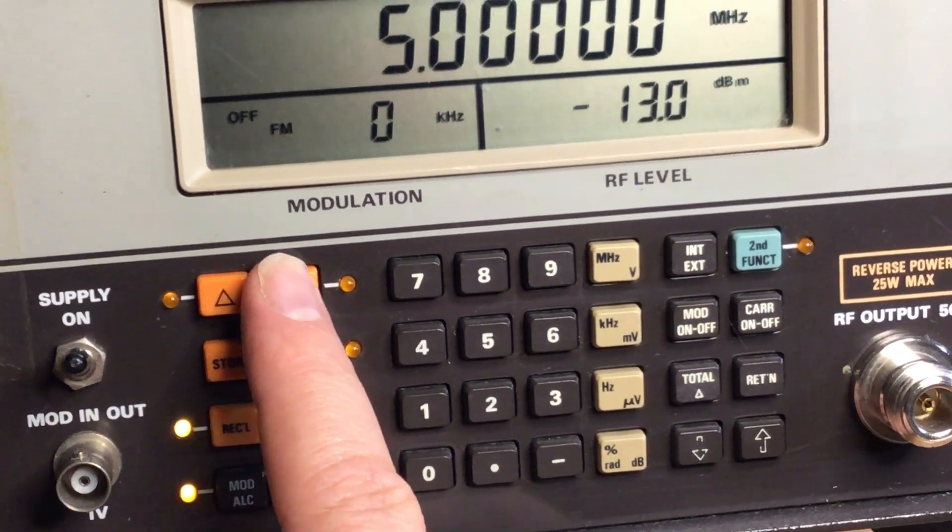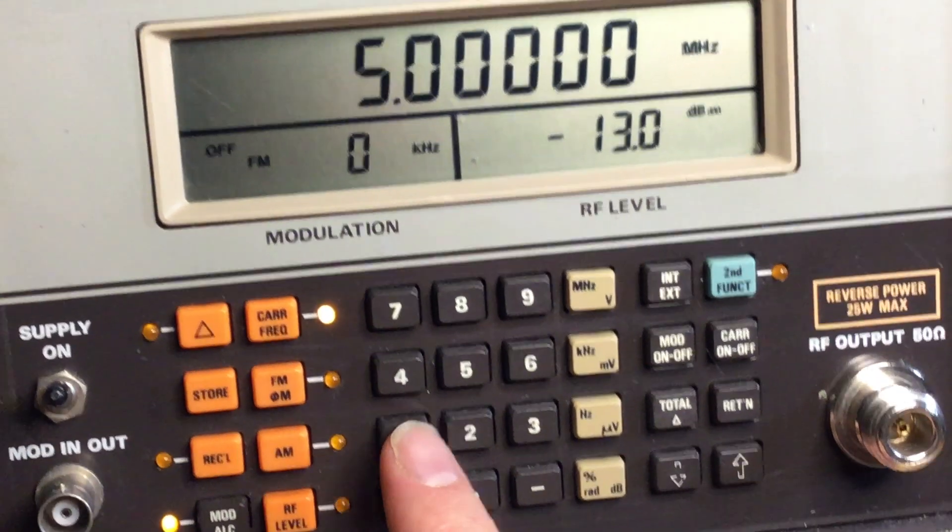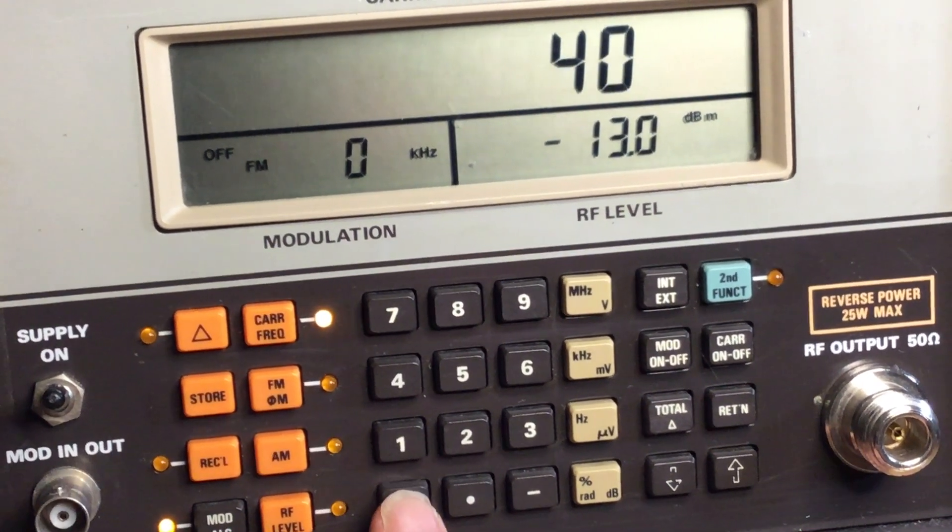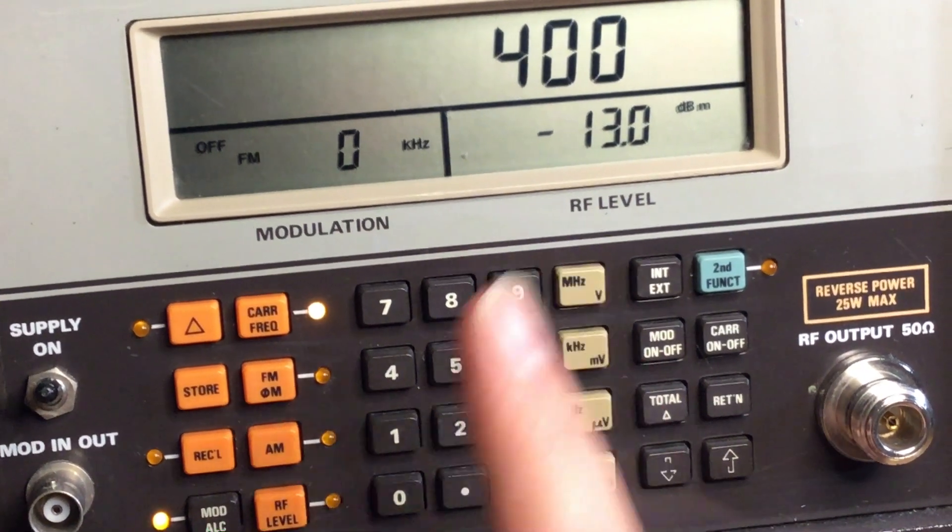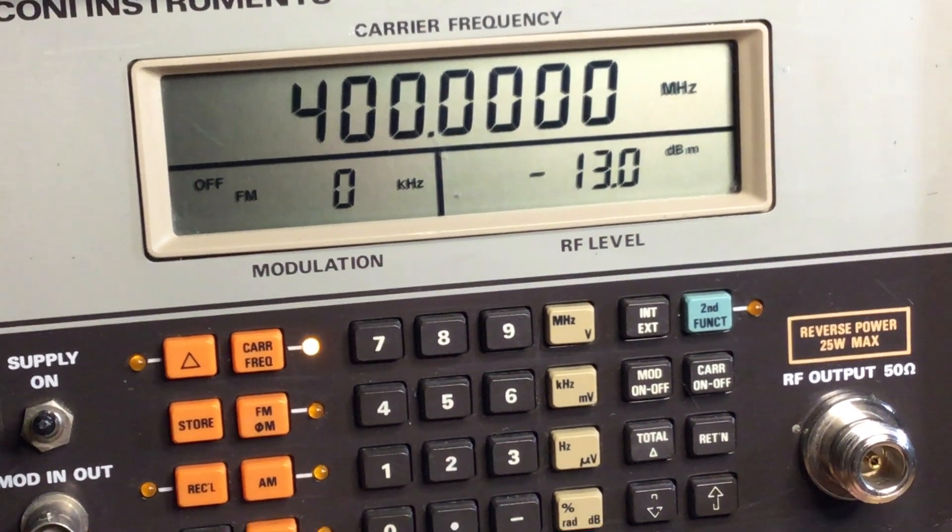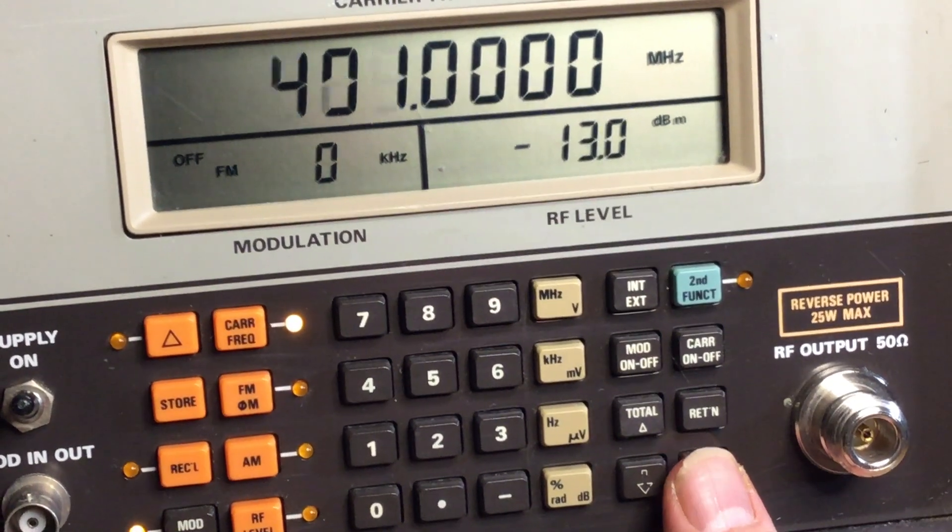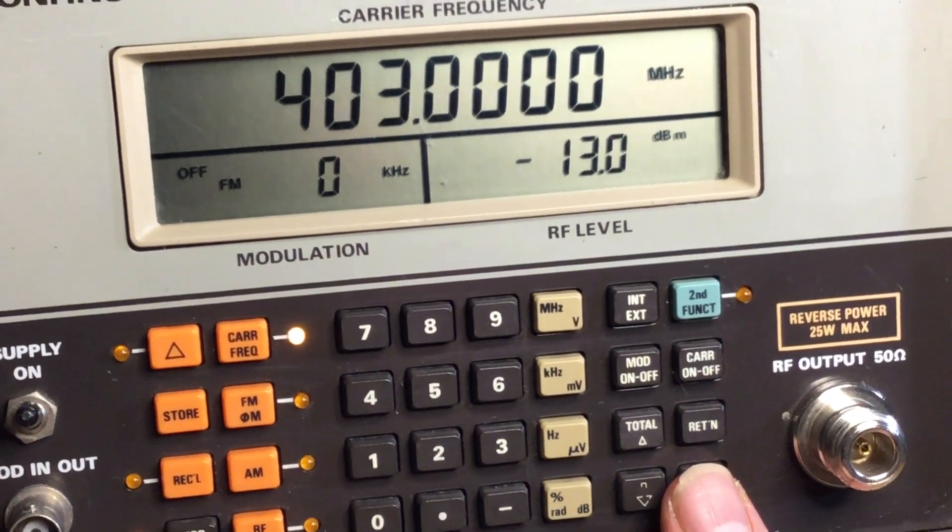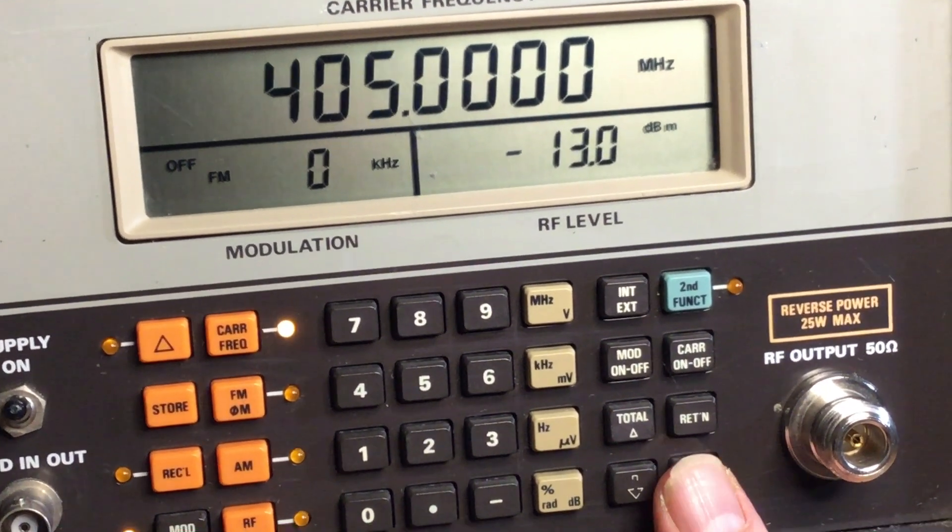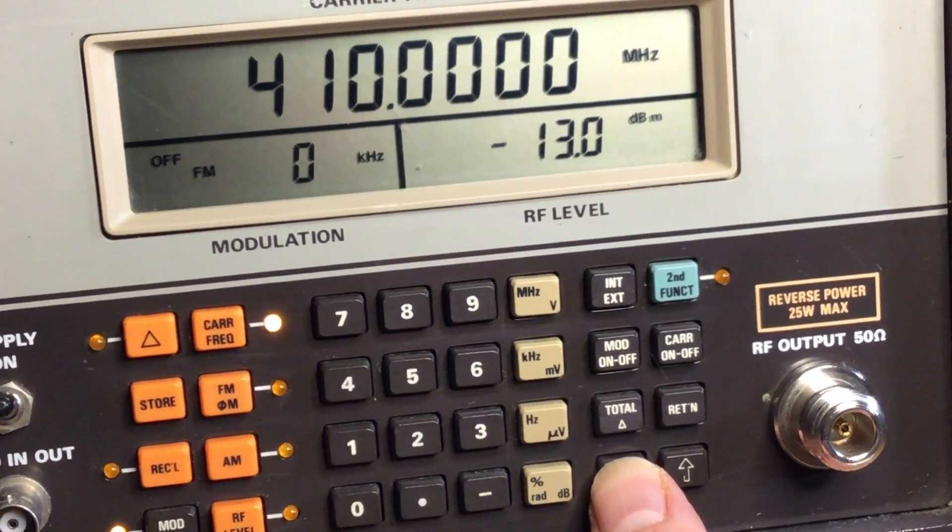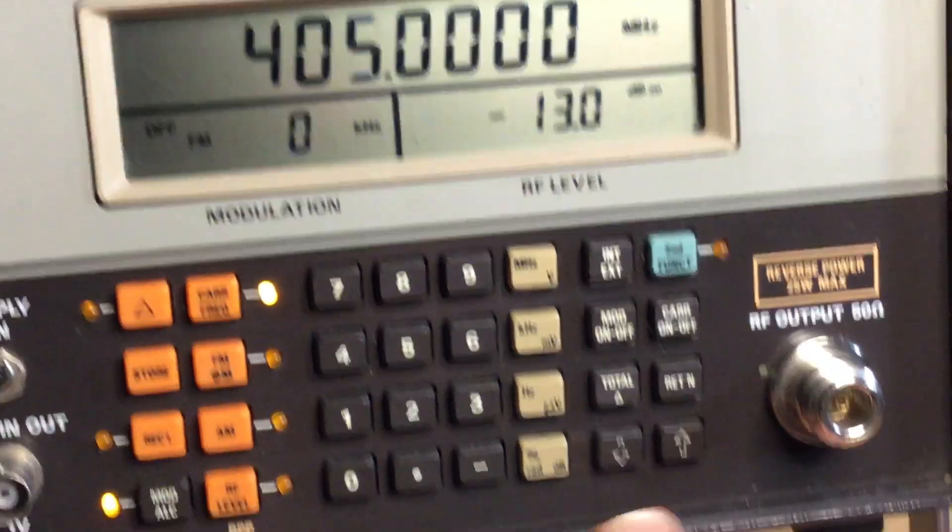You can set up the carrier frequency quite easily as well. So for example I could go for 400 megahertz, and we've got the frequency there. You can select the increment as well as to how many kilohertz or megahertz or megahertz steps the frequency up and down, giving you an increment. You can set that with the increment key.